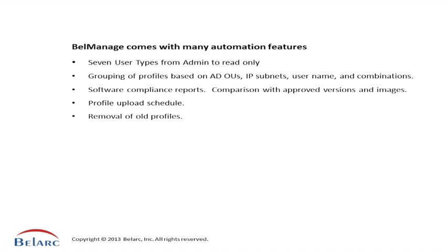Bell Manage comes with many important automation features. There are seven different user types which give different user access rights — all the way from full admin to partial, to read-only, to even download-only — so there's a lot of flexibility in managing your user types.